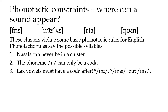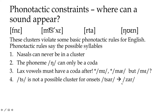Another phonotactic rule: lax vowels must have a coda afterwards. So 'me,' 'ma,' or 'may' are fine, but a lax vowel with no coda — like 'mit' or 'meh' — is marked as impossible. Interestingly, the word 'meh' — spelled M-E-H — may be the first time in the whole history of English that we allow a lax vowel phoneme without a following coda consonant. Language is constantly innovating and sometimes throws off old constraints.